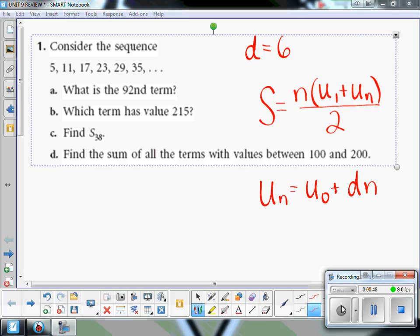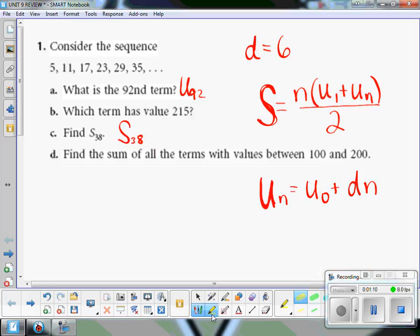Let's call this formula S and this formula U. So the U formula you would use for number 1a. It's asking you for what is the 92nd term. There's a difference between that and something like C. When they say S38, they want to know what do the 38 terms add up to. So this question would go with this formula, and this question would go with the green formula.